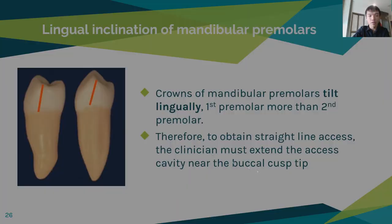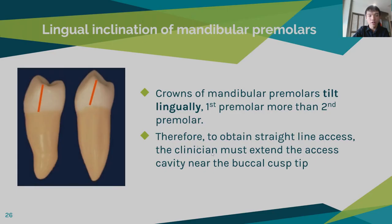For the reflection, the lingual inclination of mandibular premolars is important to note, because the crowns of mandibular premolars are inclined lingually, especially the first and second premolars. That is why you need to extend the access cavity buccally to ensure straight-line access. And that's all from my presentation. Thank you.